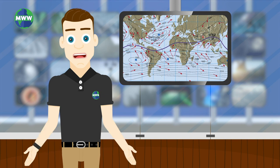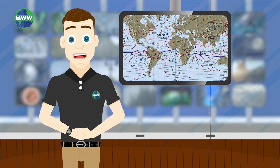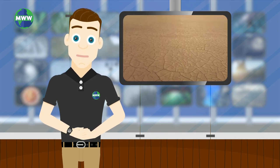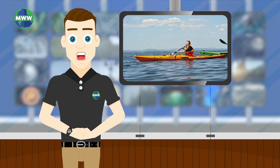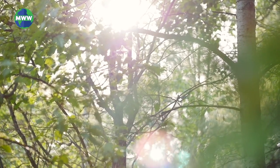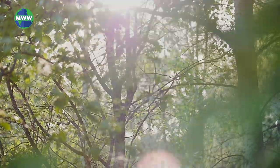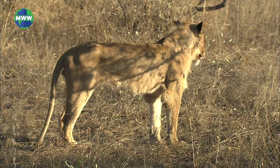The ITCZ follows the sun. It moves north in the northern hemisphere summer and south in the northern hemisphere winter, which results in the wet and dry seasons of the tropics, rather than the cold and warm seasons of higher latitudes. The sun crosses the equator twice a year during the equinoxes, causing two wet seasons each year. During the winter and summer solstice, the tropics have their two dry seasons, when the sun is more north or south of the equator.